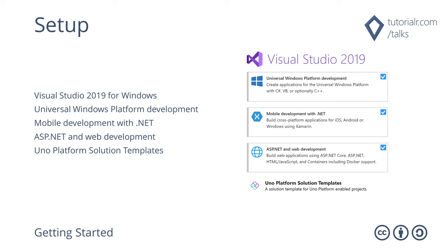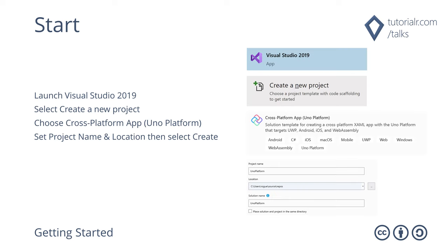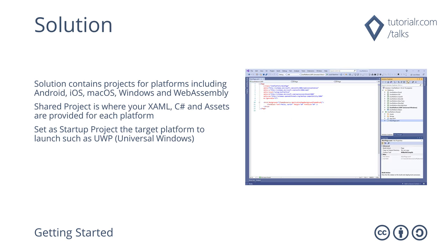You'll also need macOS if you want to target iOS and macOS. To start using Uno Platform in Windows, launch Visual Studio 2019, select Create a New Project from Get Started, choose the Cross Platform App project template, then set the project name and location and choose Create. The solution created contains projects for each target platform including Android, iOS, macOS, Windows using Universal Windows Platform, and Web using WebAssembly. The shared project is where you'll put your shared XAML, C Sharp code and assets. Set a startup project such as UWP, then run the example to see the output — Hello World.